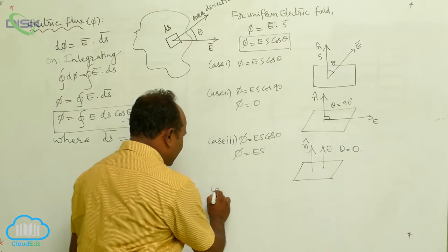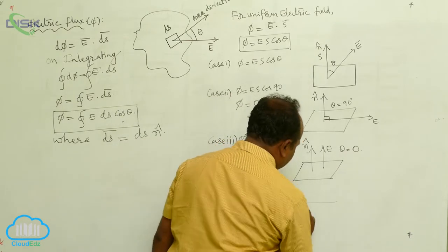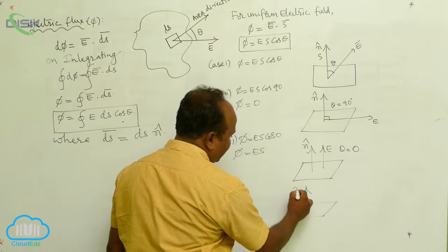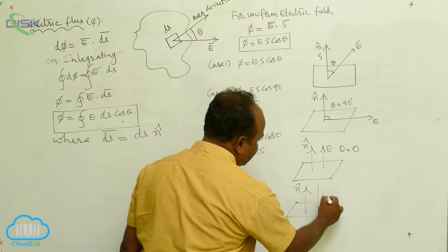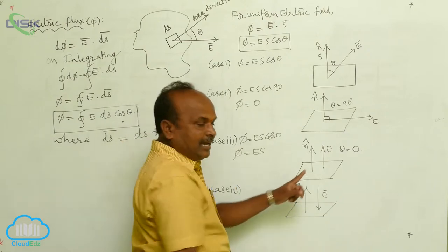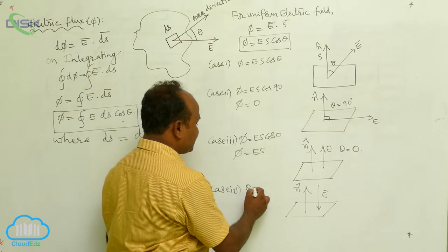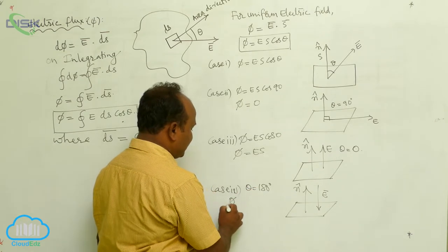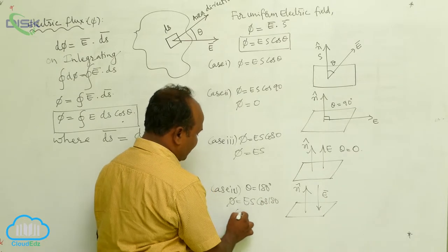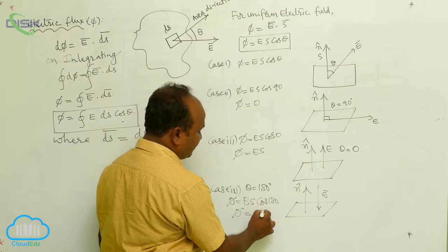Case 4: Consider an area where the area vector is directed upward and the electric field intensity is directed downward — they are in opposite directions. Therefore theta is 180 degrees, and phi equals E·S·cos180°. Since cos180° equals -1, phi is equal to -E·S.